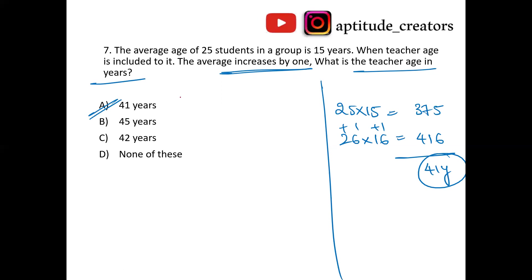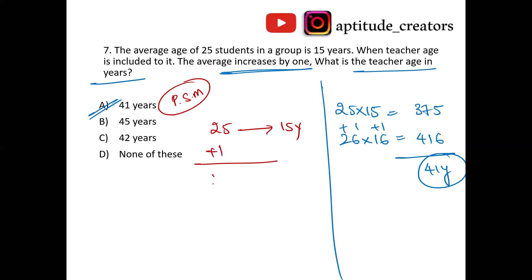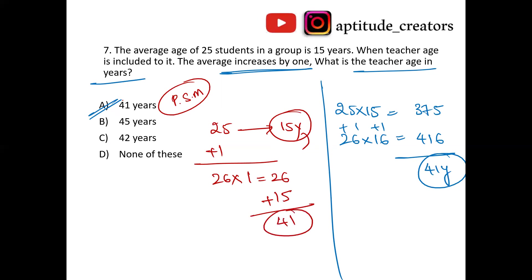Shortcut: 25 students with average 15. When teacher is included, average increases by 1. So 26 × 1 equals 26. Initial average is 15, so teacher's age is 15 plus 26 equals 41 years. Answer is option A, 41 years.